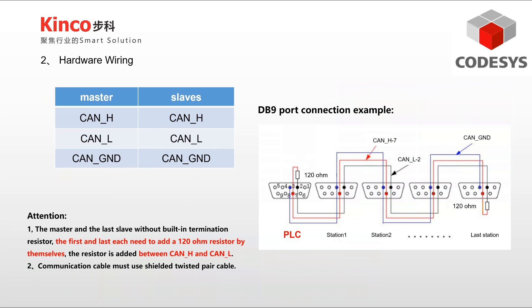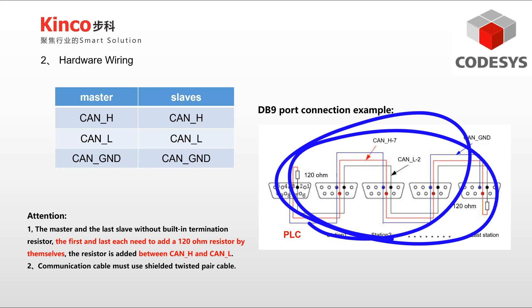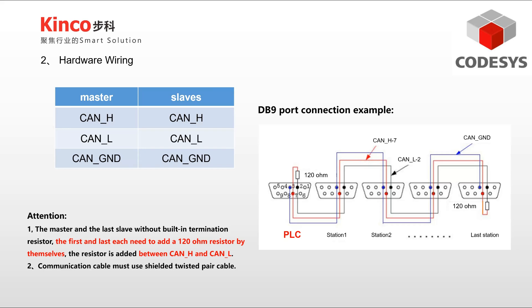The hardware wiring of the servo is CAN-H to CAN-H and CAN-L to CAN-L. CANOPEN communication requires a 120-ohm resistor to be connected to both the first and last nodes. As you can see in the figure, the right side shows the connection of the DB9 type interface.